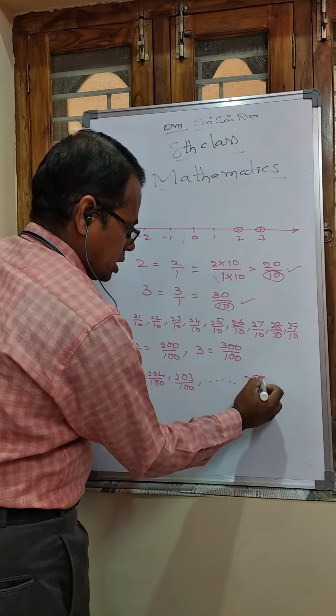To insert another rational number, let A equal 2 and B equal 5/2. The mean is (2 + 5/2) / 2 = (4/2 + 5/2) / 2 = (9/2) / 2 = 9/4. So 9/4 is a rational number between 2 and 5/2. In the same way, we can find so many rational numbers between 2 and 3 using the mean method.